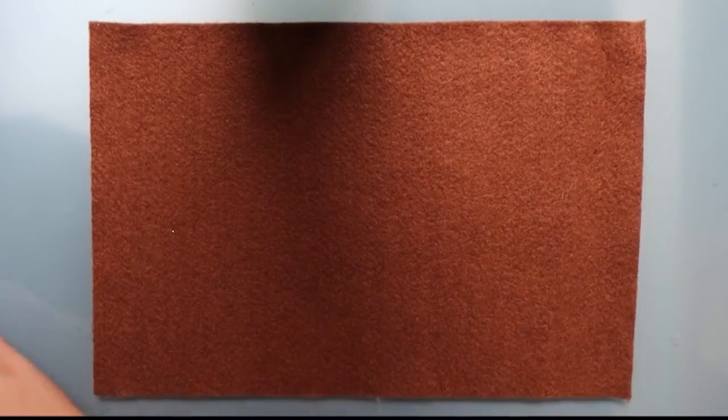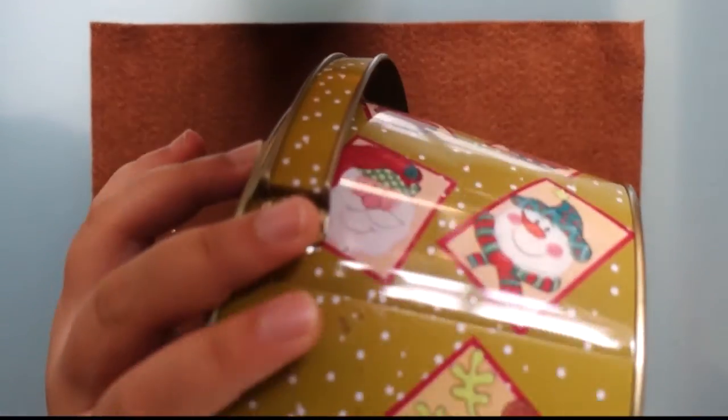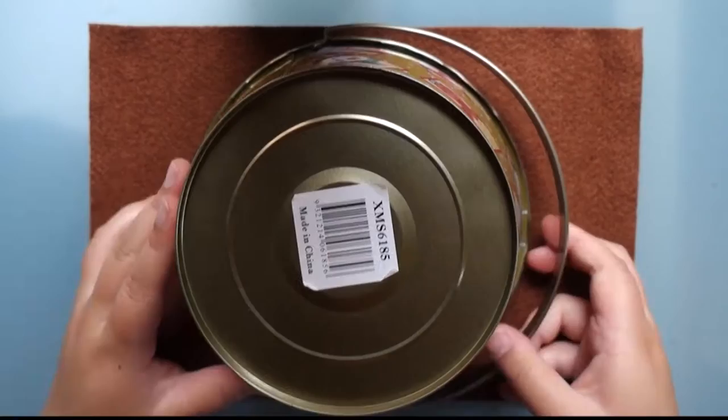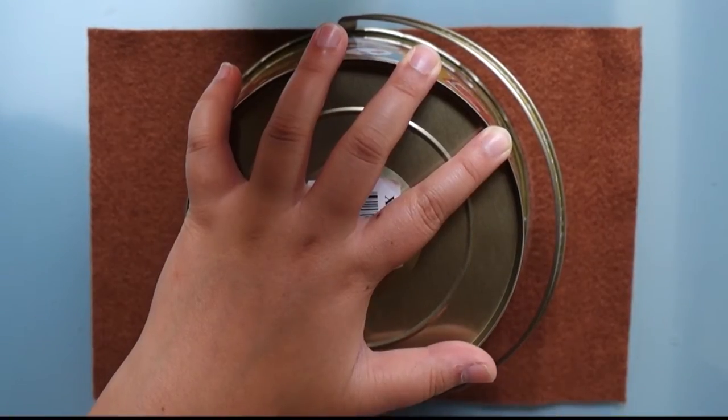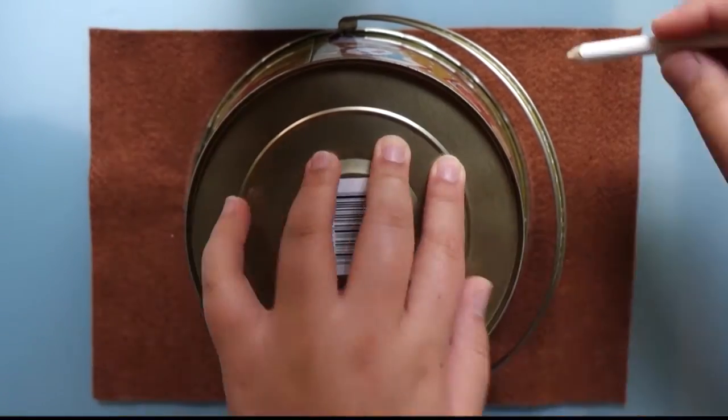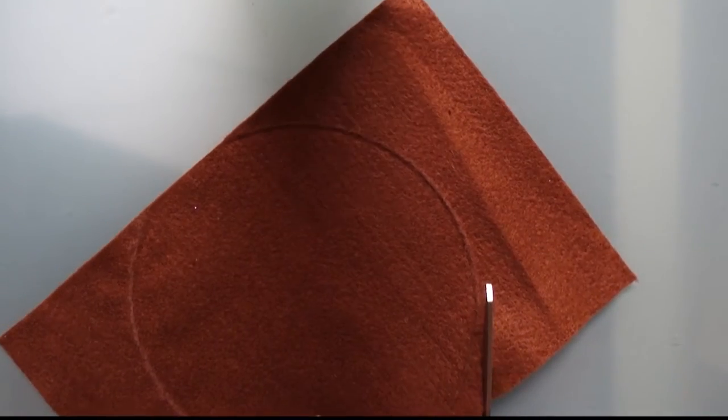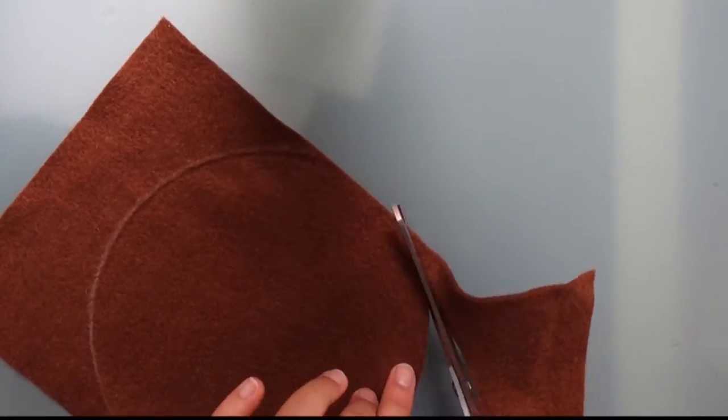Now let's get started with our brown felt. Grabbing a round object, here's my Christmas tin. I'm going to place it down flat onto my felt and using a white pencil I'm going to trace out the circle. Then grabbing my fabric scissors I'm going to cut out my large circle.